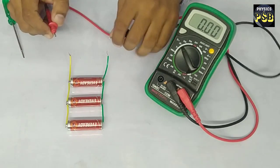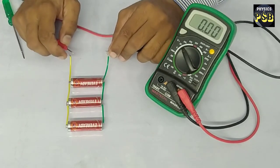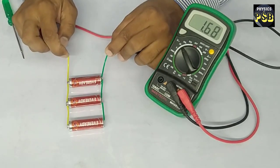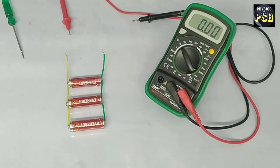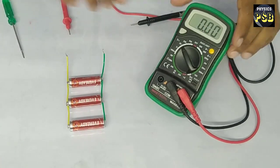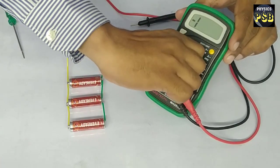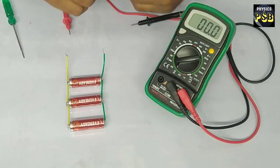While measuring the EMF we connect the multimeter parallel to the battery. While measuring the current we connect the multimeter in series. First I will set the multimeter to read the current.